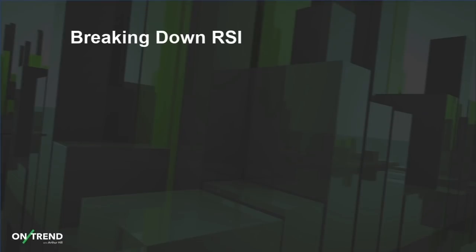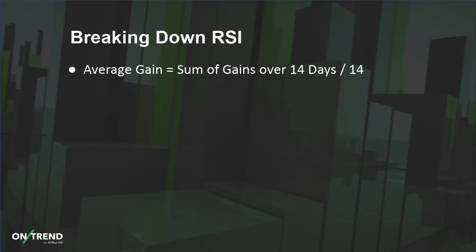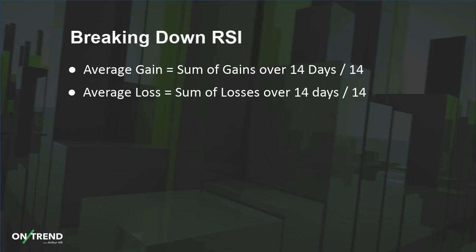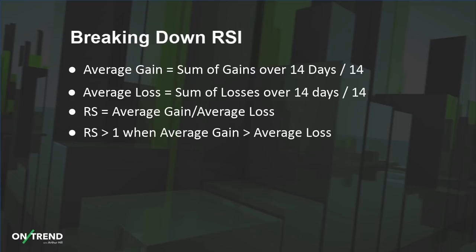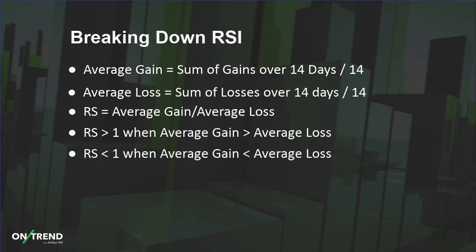So why can RSI be used as a trend following and momentum indicator? In order to understand that, we have to break down RSI and understand what makes it tick. RSI is composed first of the average gain and the average loss. The average gain is the sum of the gains over 14 days divided by 14, and the average loss is the sum of the losses over 14 days divided by 14. Then you have RS, which is the average gain divided by the average loss. When RS is above one, the average gain is greater than the average loss — prices are moving higher. When RS is below one, prices are moving lower.